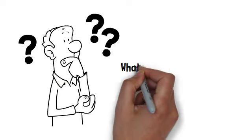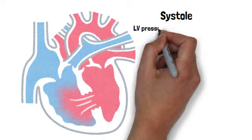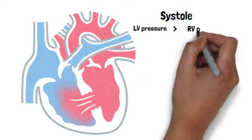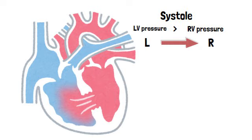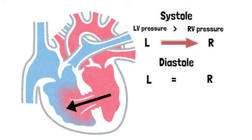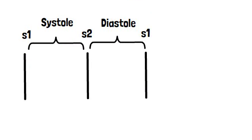So what happens in a ventricular septal defect? When there's a hole in the septum between the left and the right ventricle, during systole, when the left ventricular pressure is higher than the right ventricle, blood is shunted from the left to the right side of the heart due to the pressure gradient. But during diastole, there will be minimal to no shunting because the left and right ventricular pressure during diastole is almost equal.